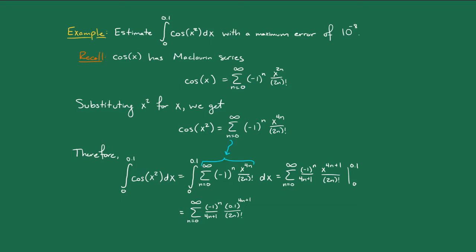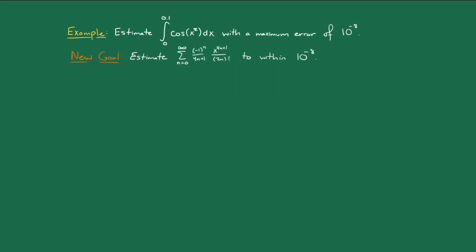We have rewritten this integral as a series, and now the goal is to give an approximation of this series to within 10⁻⁸. As you may have guessed, to approximate the sum of this series, we're going to use the Alternating Series Estimation Theorem.